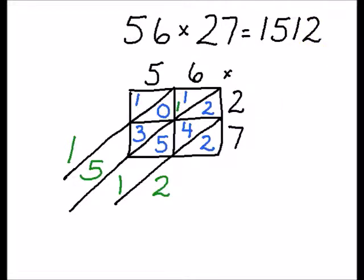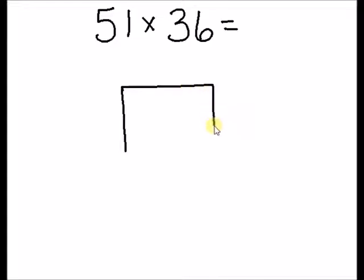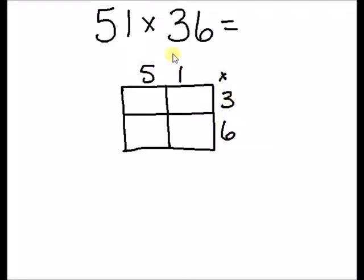Let's try another one so you can have some more practice. Let's do 51 times 36. Remember the first step is to draw a lattice. This lattice needs to be two squares by two squares because we have two digits times two digits. Next we draw out the diagonal lines corner to corner.